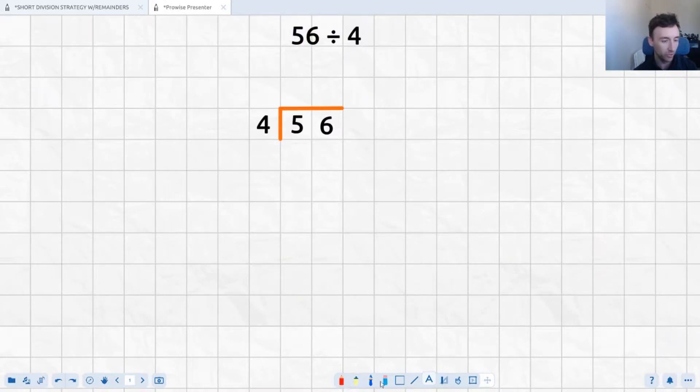Now how the short division model works basically is you turn it into a much easier division model. So we've got 56 divided by 4. So in this case we're going to take the number being divided, 4, and we're going to see how many times it goes into 5 here. Now we're not actually seeing how many times it goes into 5, we're actually seeing how many times it goes into 50 here.